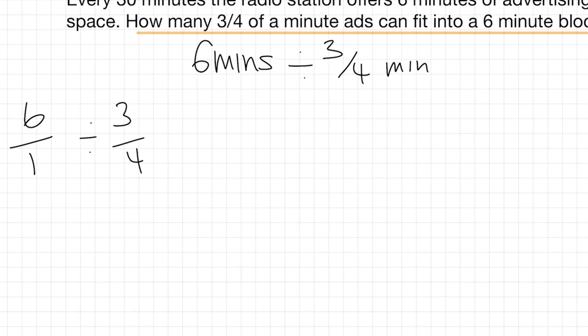Alright, now when we're dividing fractions, there's a simple little technique we can use, and that is to swap these two around. Now if we did that, we would now have six over one divided by four over three, because we've swapped them around.